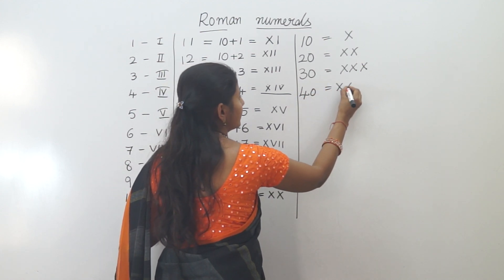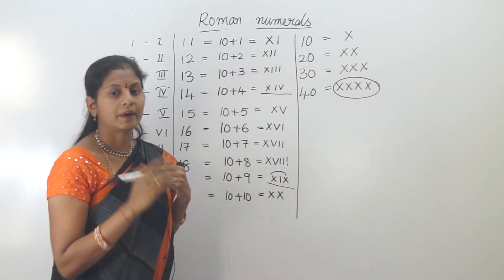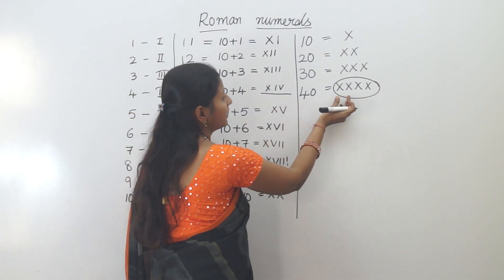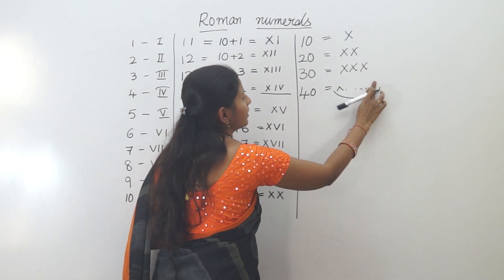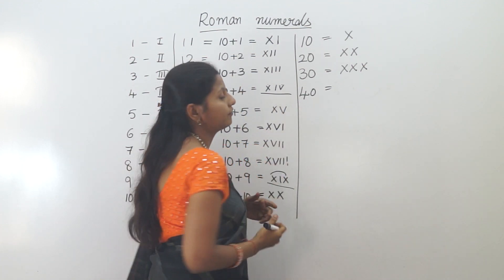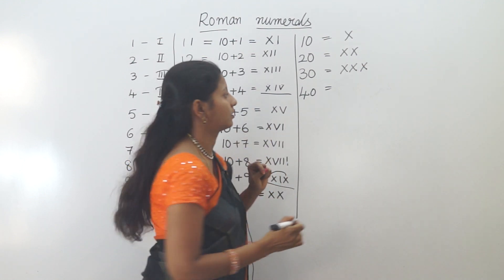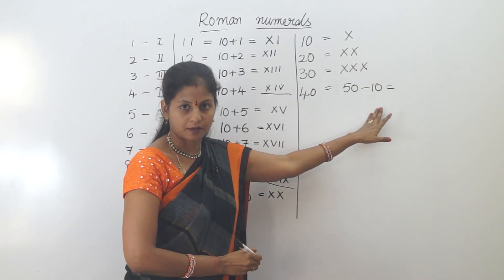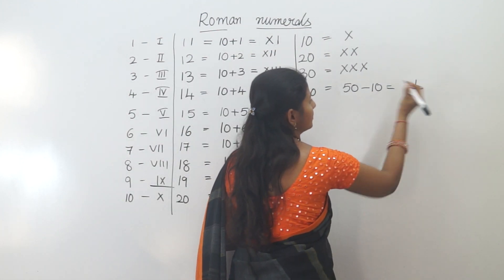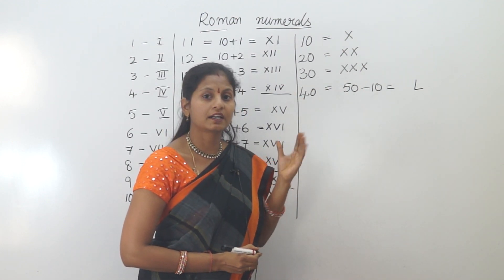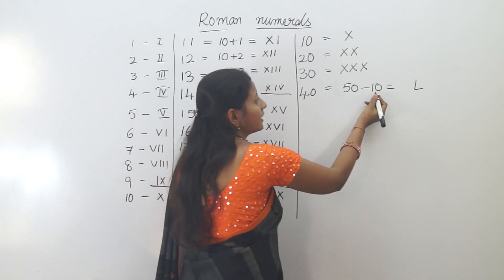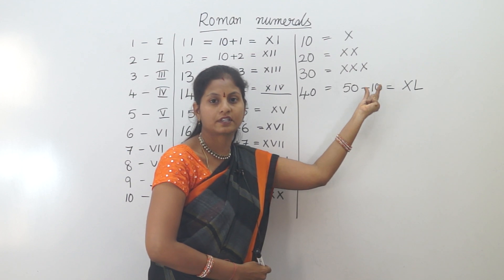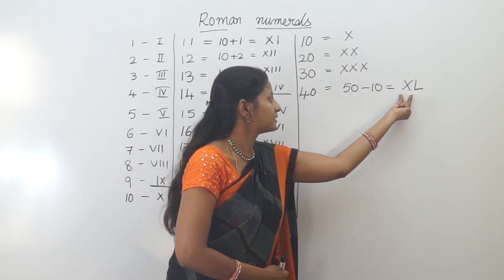For 40, writing four X's (XXXX) is wrong. The rule says you can only repeat a symbol up to 3 times. So 40 uses subtraction: 50 minus 10. L is the symbol for 50, and X is 10, so 40 is written as XL.